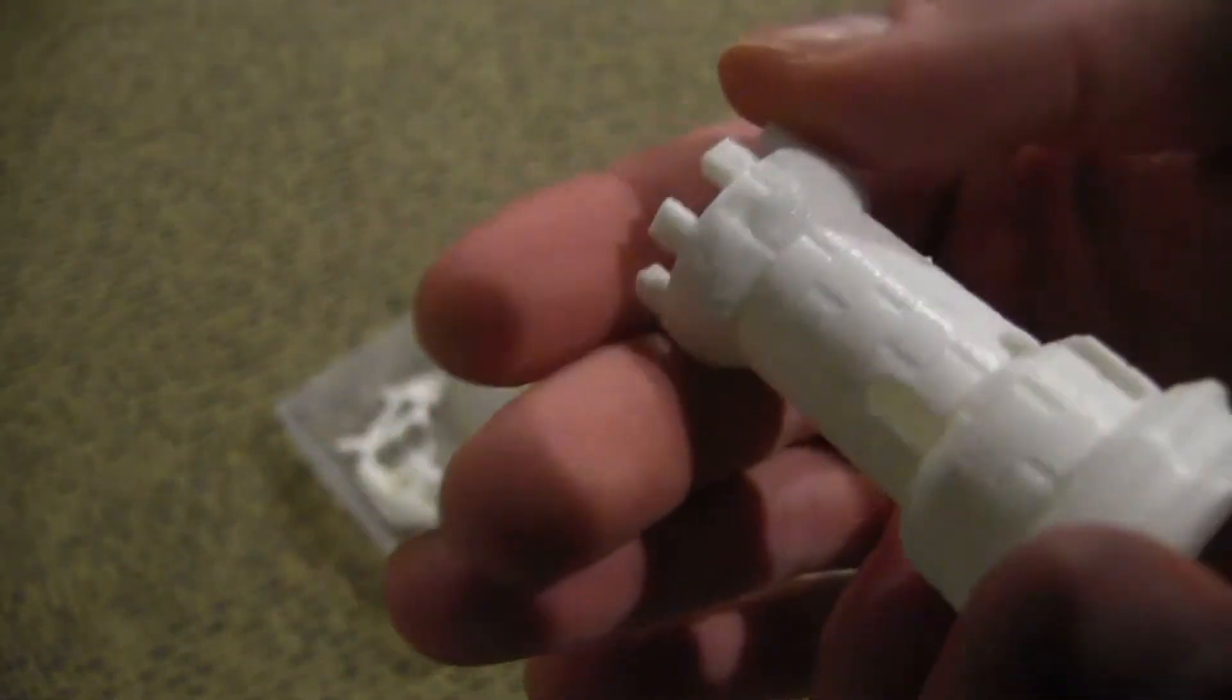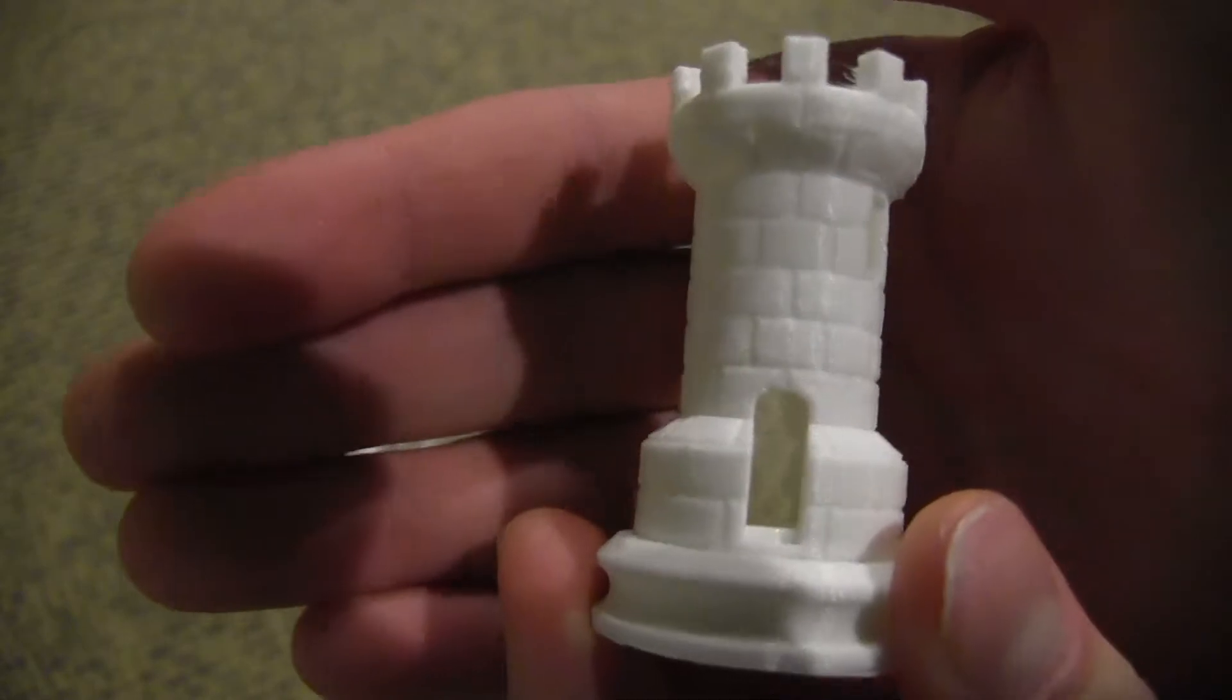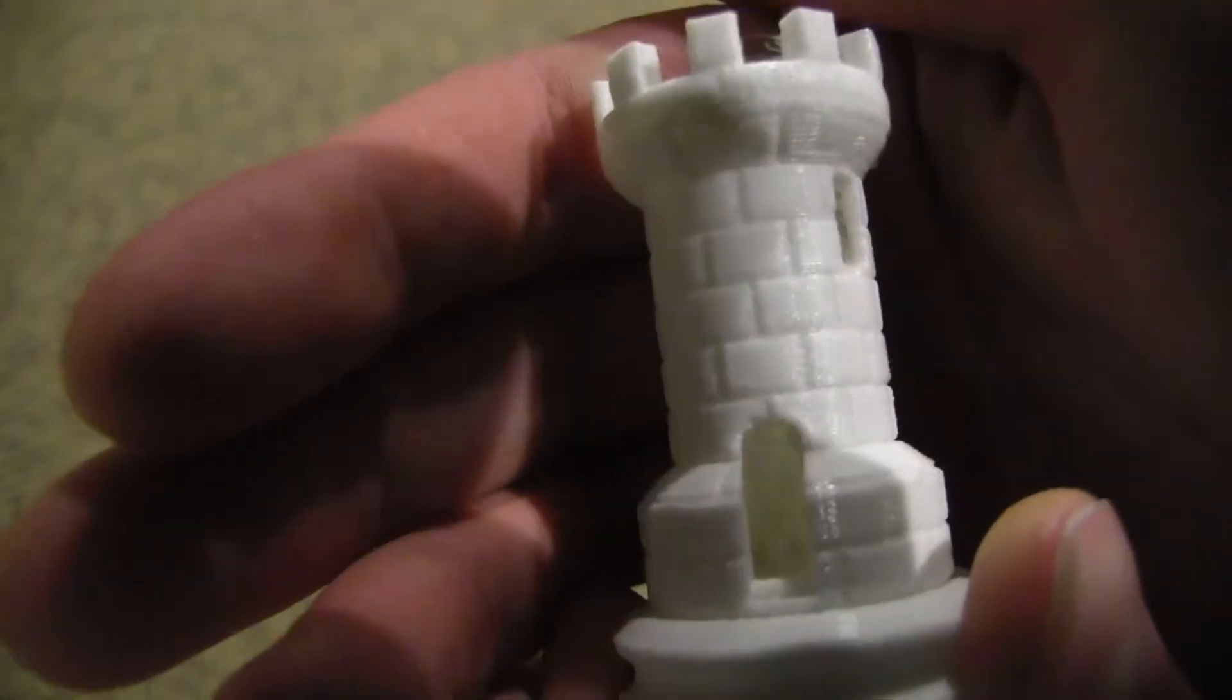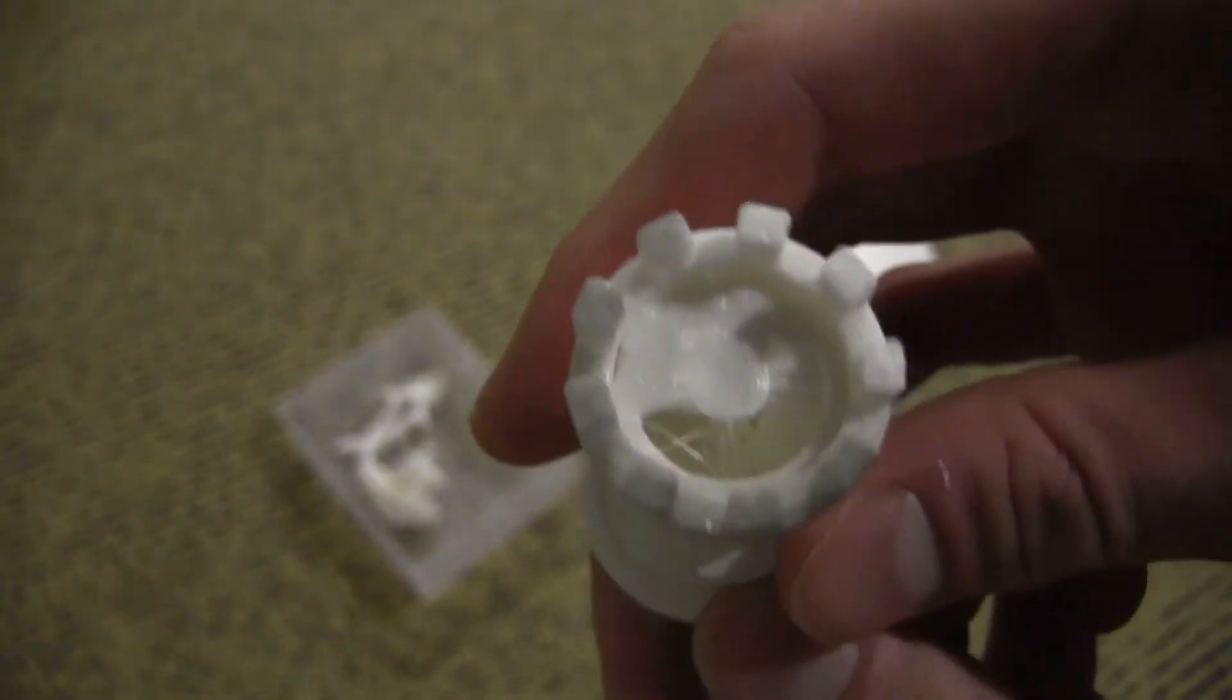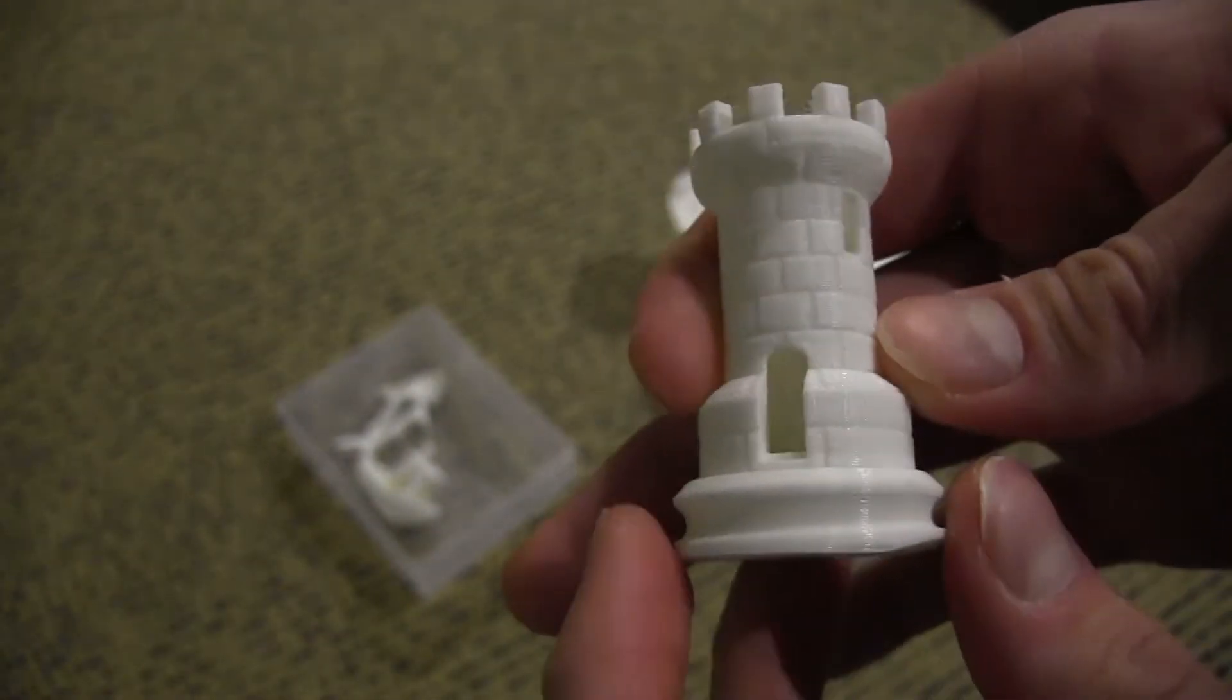You can see the bricks came out really nicely, the overhang handled pretty well, and you can even see the little spiral staircase in the middle as well. There are the stairs, a little bit of stringing right there but otherwise everything looks fine.